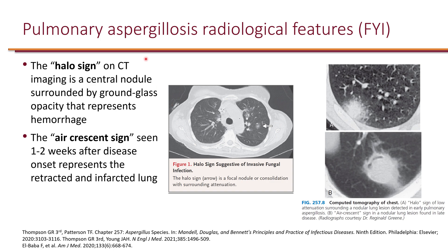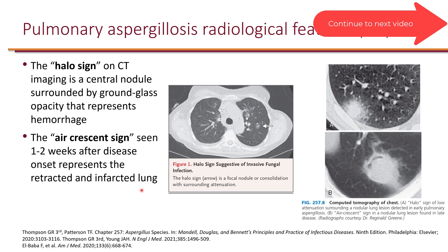Something classic about aspergillosis is that on CT imaging, there is often the halo sign — essentially a central nodule surrounded by ground glass opacity representing hemorrhage. Another finding seen one or two weeks later is the air crescent sign, which represents retracted and infarcted lung.